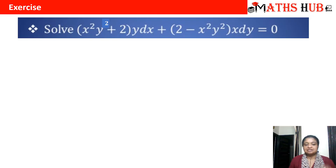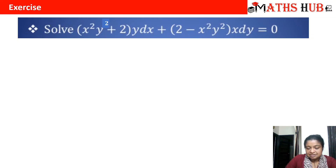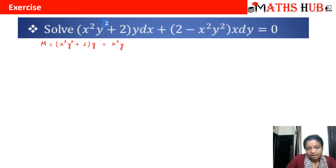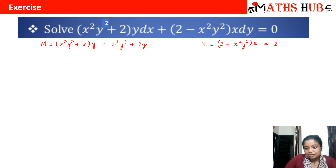Let's see how this is applicable in a question. The first exercise: solve (x²y² + 2)y dx + (2 − x²y²)x dy = 0. First, let us test whether this equation is exact. Comparing the coefficient of dx, we get M = (x²y² + 2)y, so opening the brackets gives x²y³ + 2y. Similarly, N, the coefficient of dy, is (2 − x²y²)x, which gives 2x − x³y².